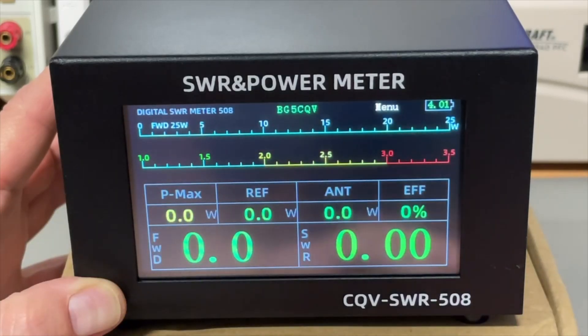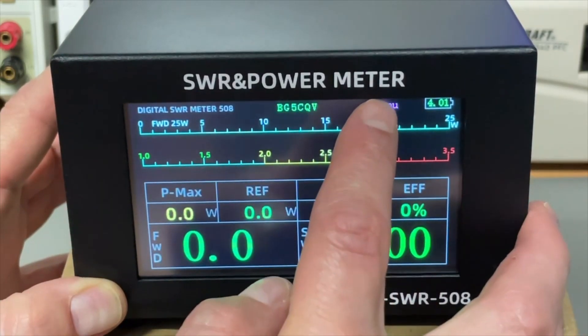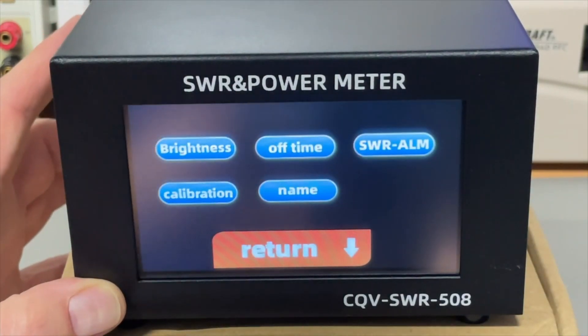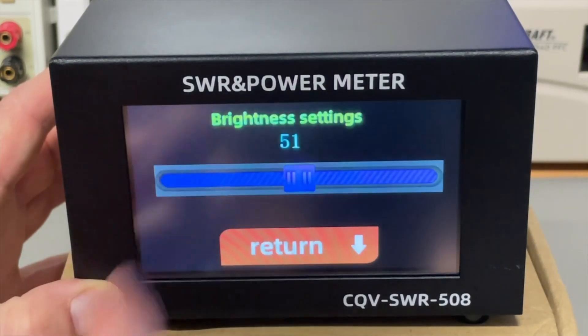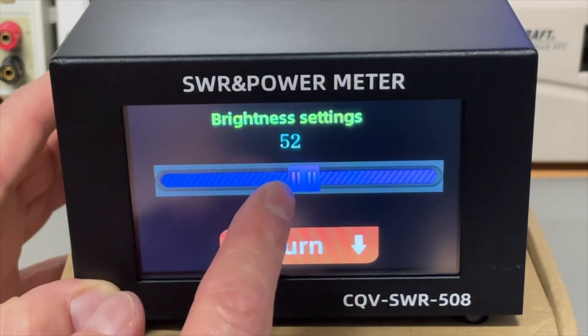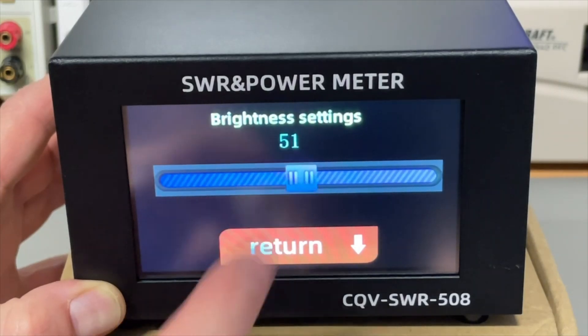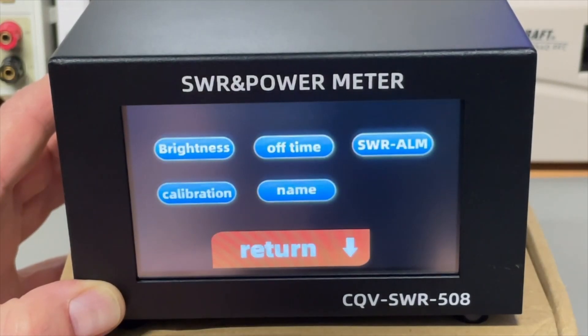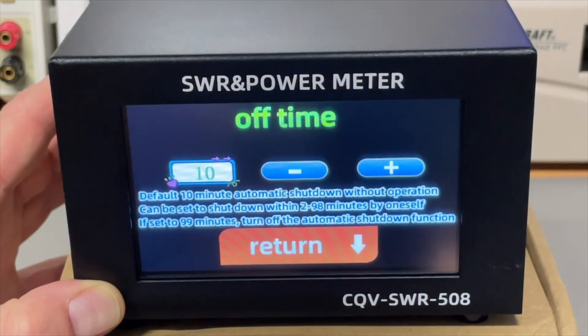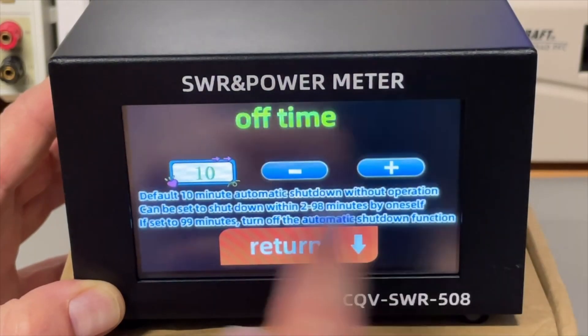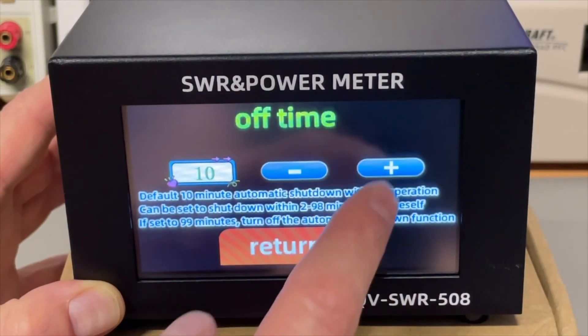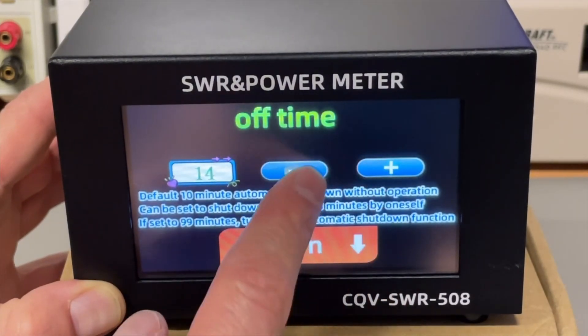But maybe you could type in your own call sign there. And if we go to the menu. We can set a few things. Brightness. Well the 50% was okay for me. So 50% return. Auto power down. It is now 10 minutes. We can increase it. Lower that.